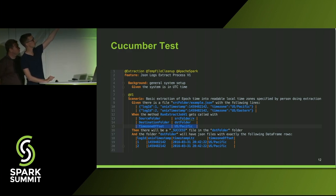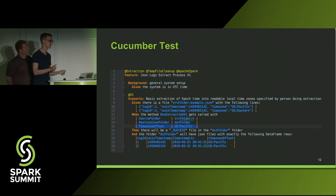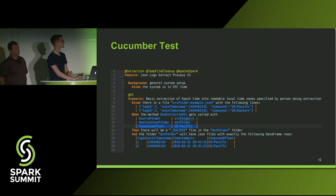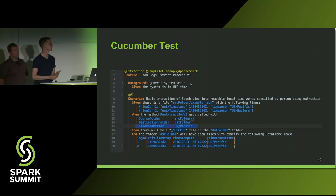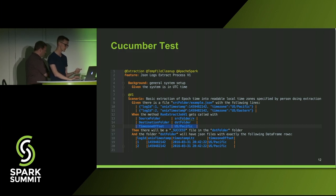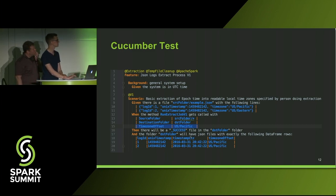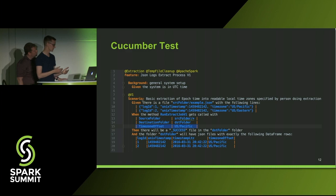Here you can see a couple of different tags for the test at the top. Line two has the feature name — this one is called 'JSON Logs Extract Process Version 1.' This is the name of the group of tests running in this file. From there you go into your background steps. We run all tests in UTC time because we have developers running tests in all different time zones — if I assert the output will be a certain time and someone else runs it in Boston, you'd get a difference of three hours and the unit test would fail.